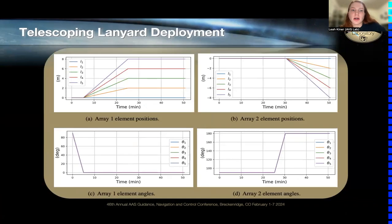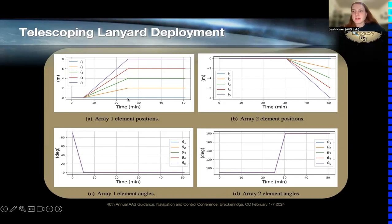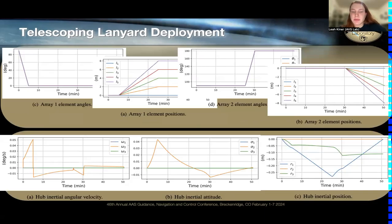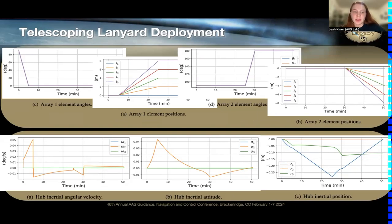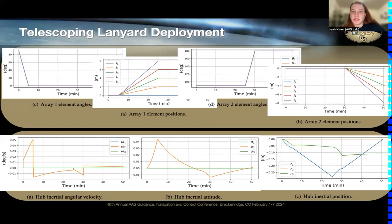For the telescoping lanyard case, both arrays again initially rotate, followed by all elements moving with different acceleration profiles and snapping into place at the final time. The hub angular velocity is much smoother here — similar to the rotational lanyard case — because accelerations are only applied at the start and end of the unfurlment. The hub attitude and position again respond accordingly to the array element motion.